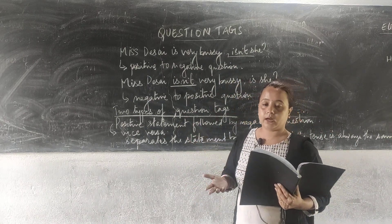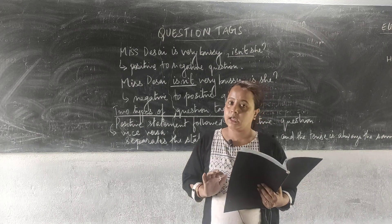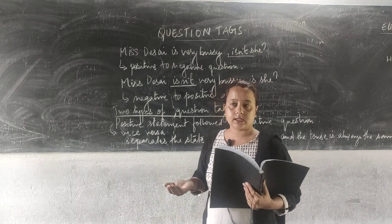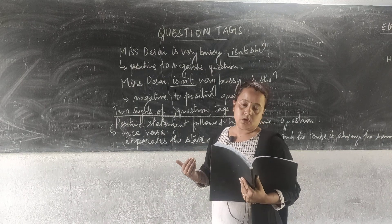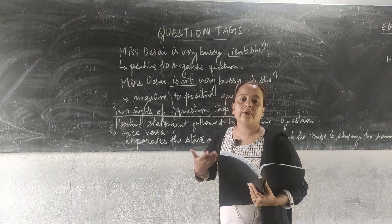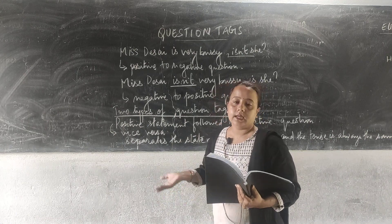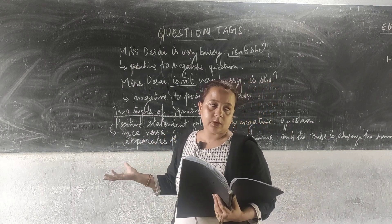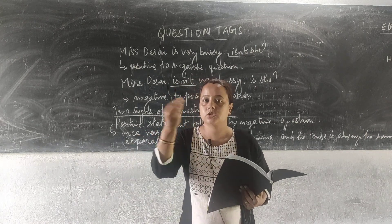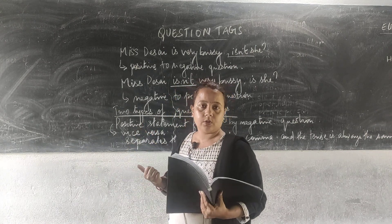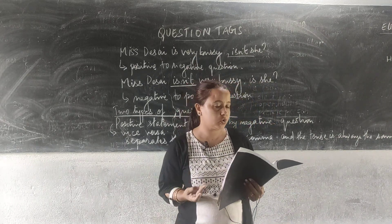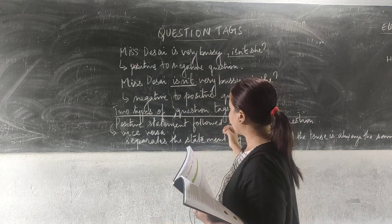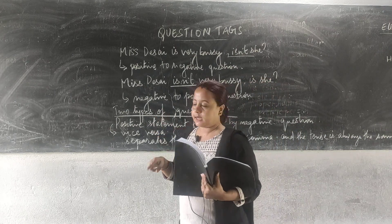There are important things to understand. First, the tense always remains the same — if it is past tense, it stays past tense; if it is present, it stays present. For example, if you have 'is,' do not write 'was,' as that would change it to past tense. Second, the comma is very important in a question tag, because it denotes that you are changing from positive to negative or negative to positive. Do not change the tense — that is essential.